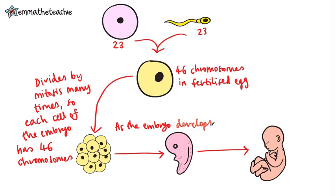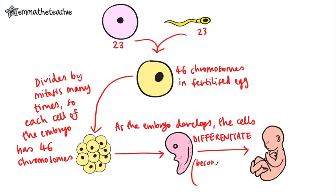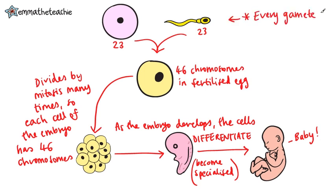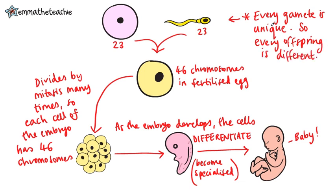As the embryo develops, the cells of the embryo differentiate. This just means that they become specialized for a particular function, like detecting light in the eyes. Eventually, all the cells are specialized and you have a baby. The last thing to mention is that meiosis makes every gamete unique, so every offspring is different.